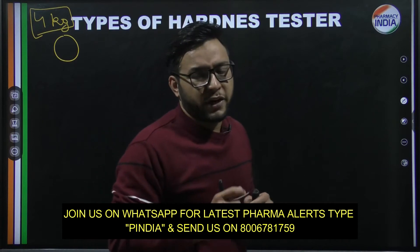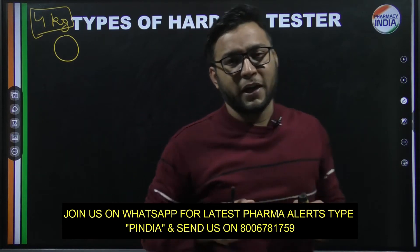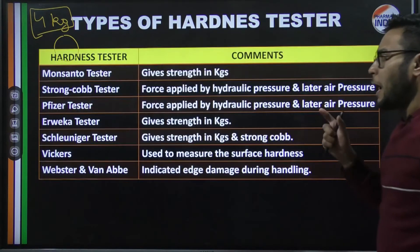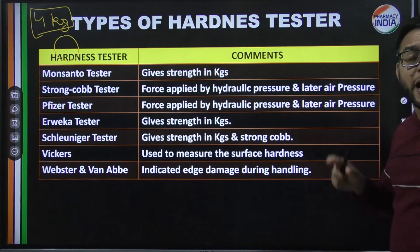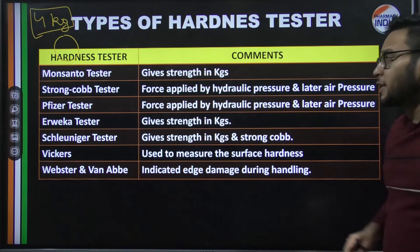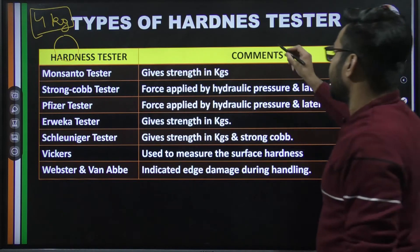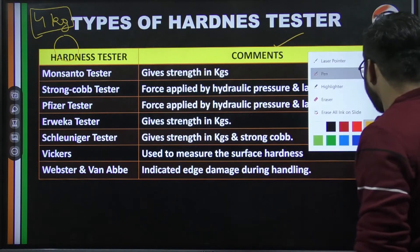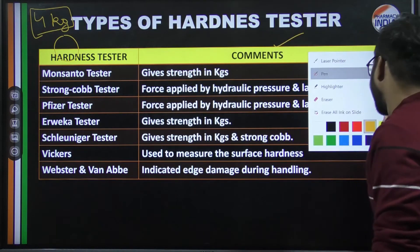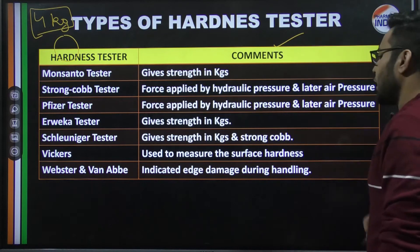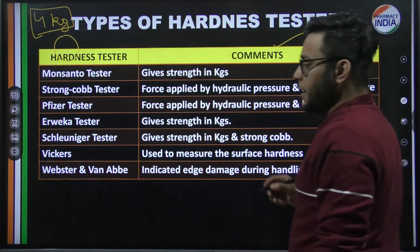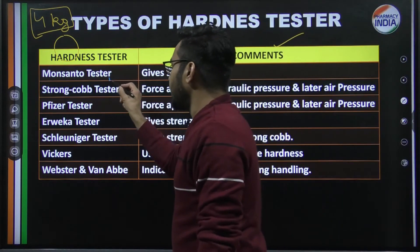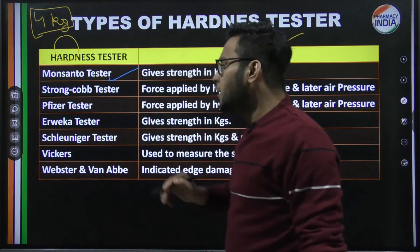Now let's talk about the hardness testers and their specifications — what are their special features. First on the list is the Monsanto Tester. The Monsanto Tester gives strength in kilograms.